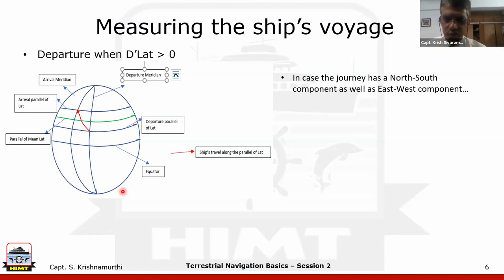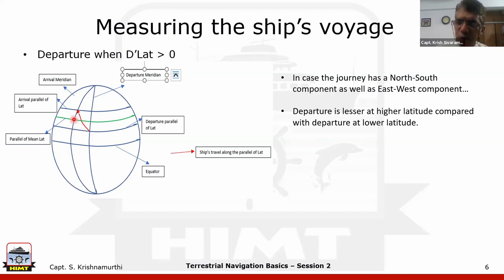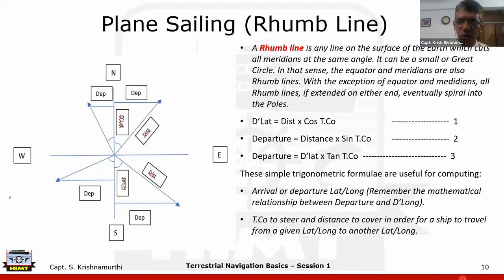Departure is not the actual distance travelled. The actual distance is the hypotenuse of the triangle. Departure is only the east-west component. D-lat is the north-south component. The relationship between actual distance travelled, departure, and D-lat has already been given through the plane sailing formulae.